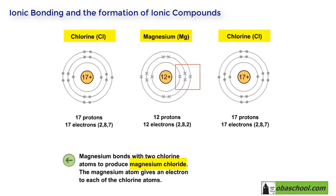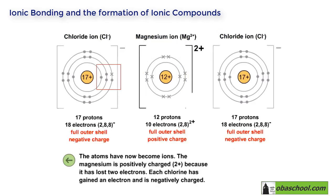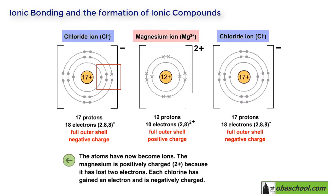The magnesium atom gives an electron to each of the chlorine atoms, because magnesium needs to lose two electrons to complete its outer shell. However, each chlorine atom only needs to gain one electron to complete its outer shell. This transfer of electrons results in the formation of ions: two chloride ions and one magnesium ion.